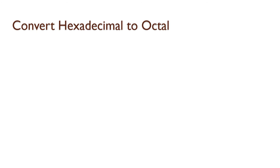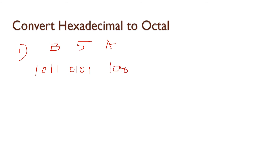How to convert hexadecimal to octal — the basic two-step method. Step one: convert the hexadecimal values to binary values. Step two: convert the binary values to octal. First, hexadecimal to binary conversion, then binary to octal conversion.